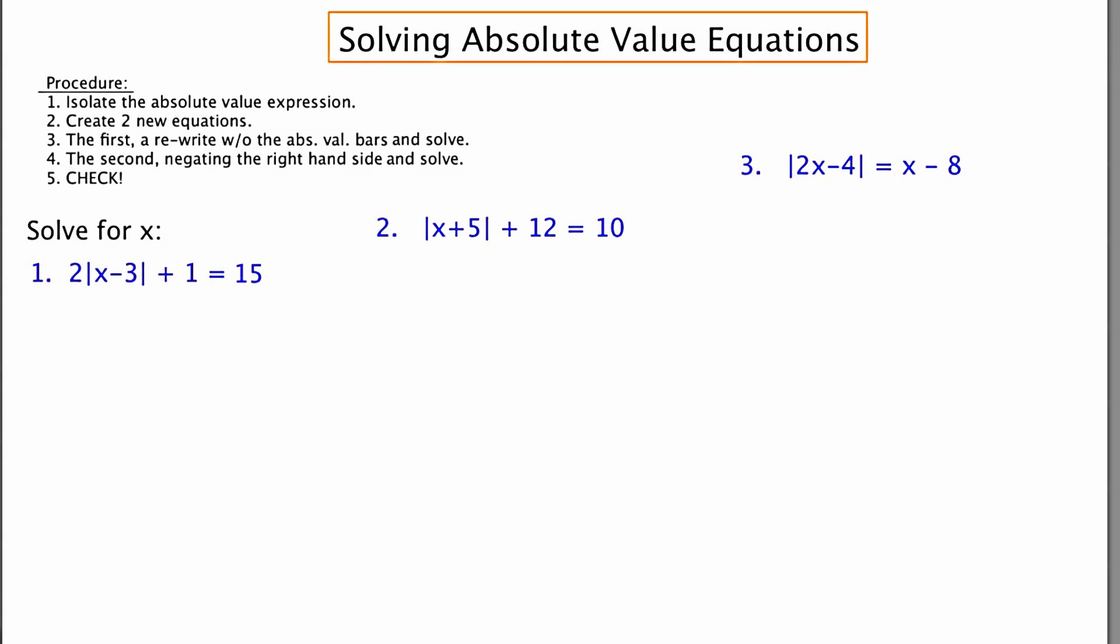Then once you've done that, you're going to create two new equations. The first is just going to be a rewrite without the absolute value bars, and then you're going to solve. The second equation is going to be a rewrite but negating the right-hand side and then solve. And negating means take the opposite of.